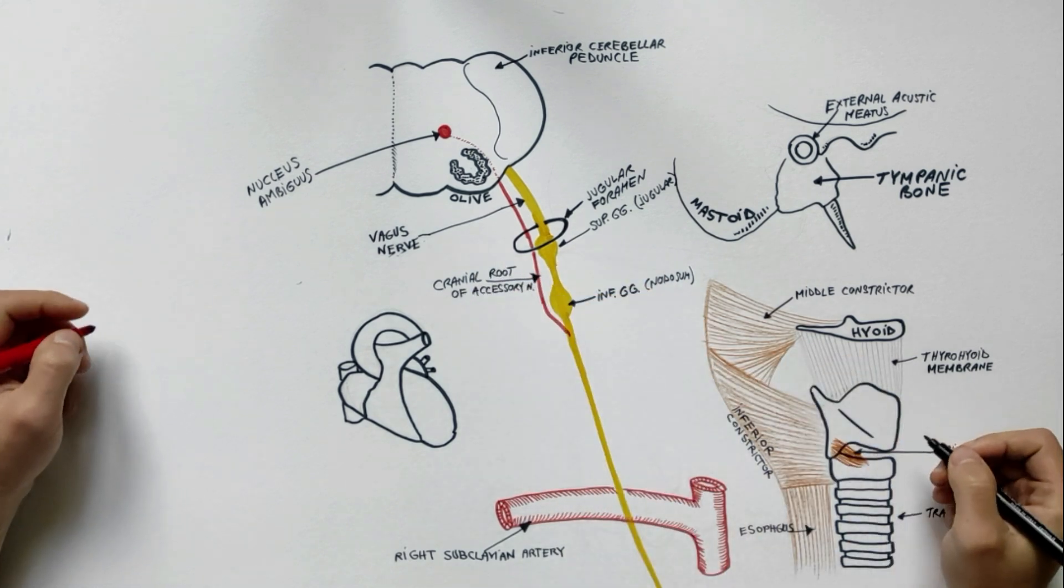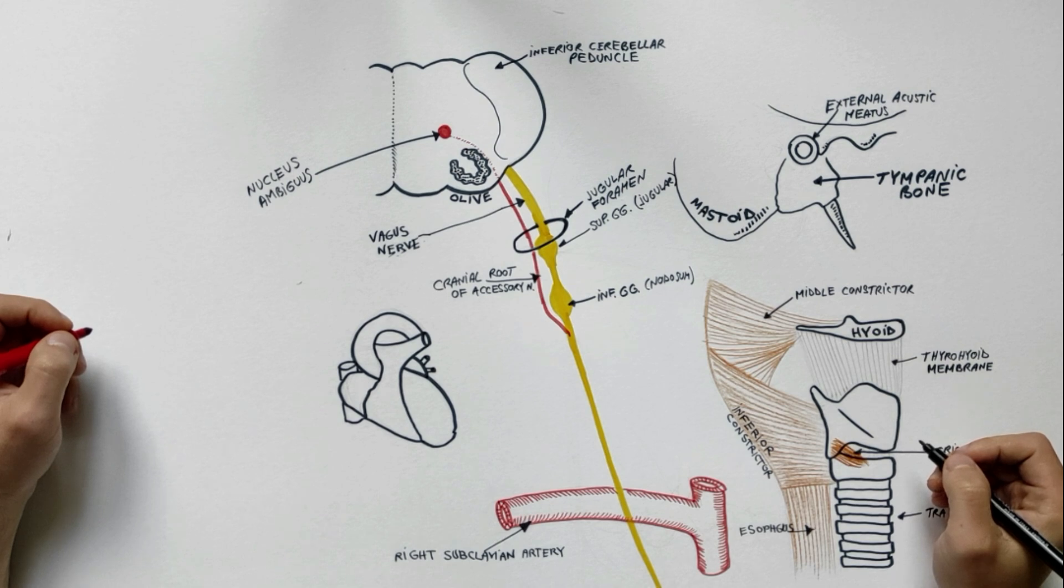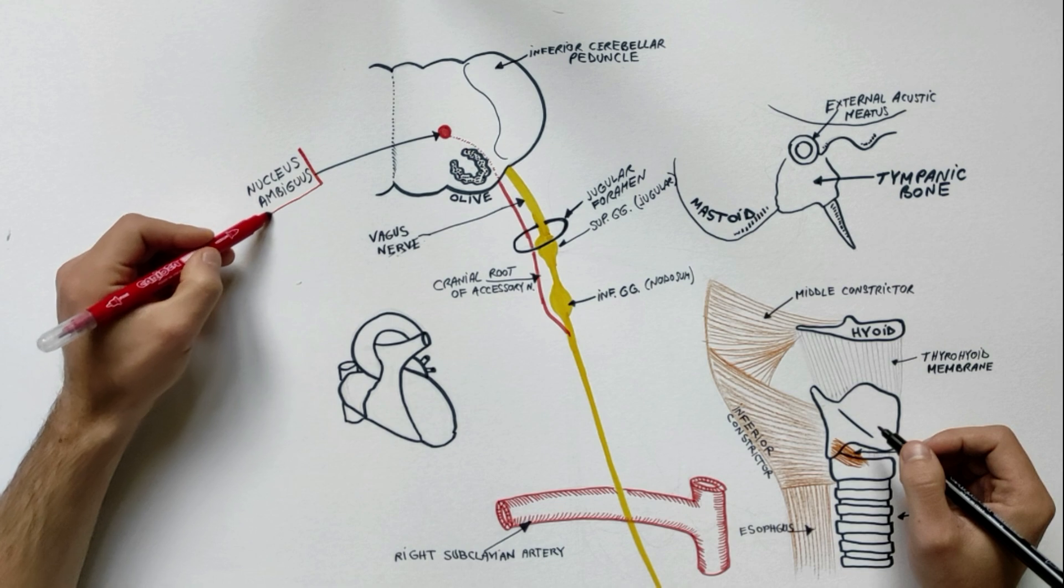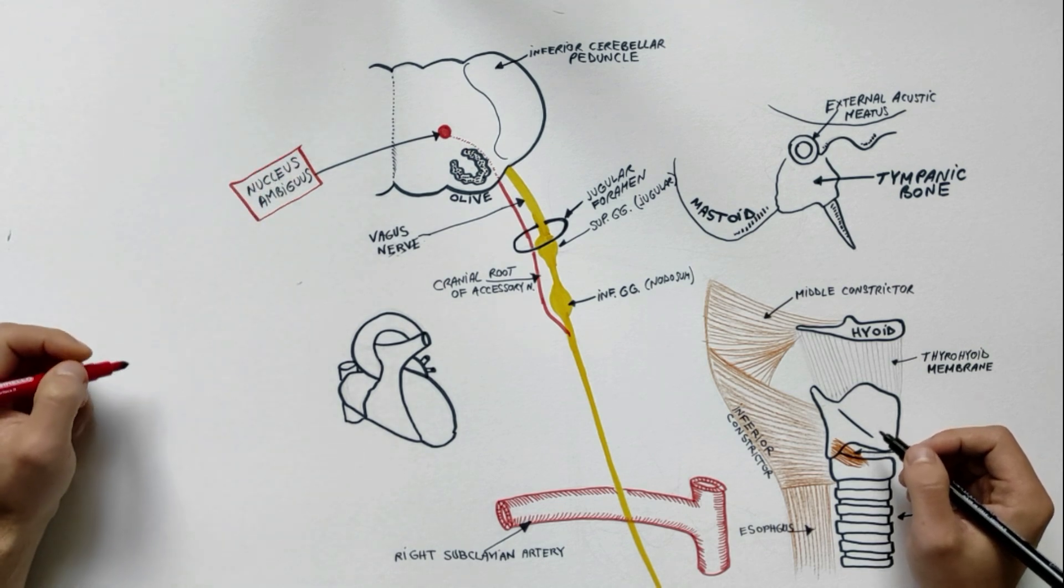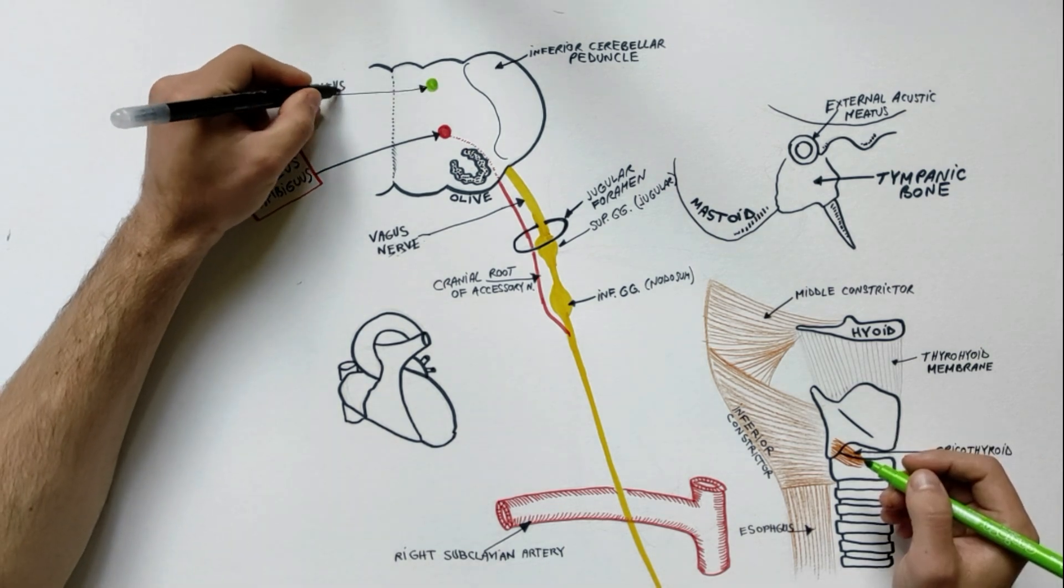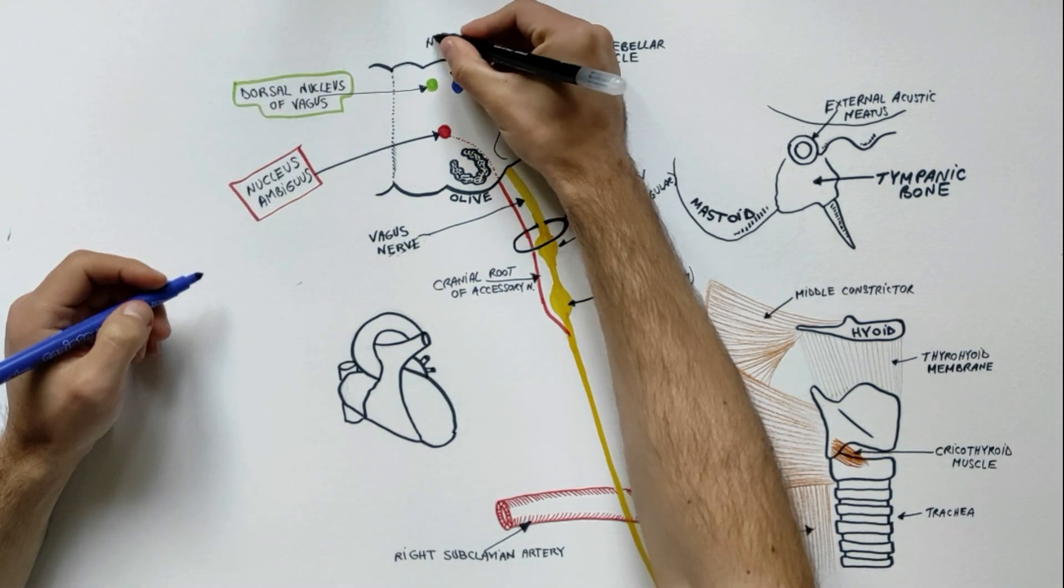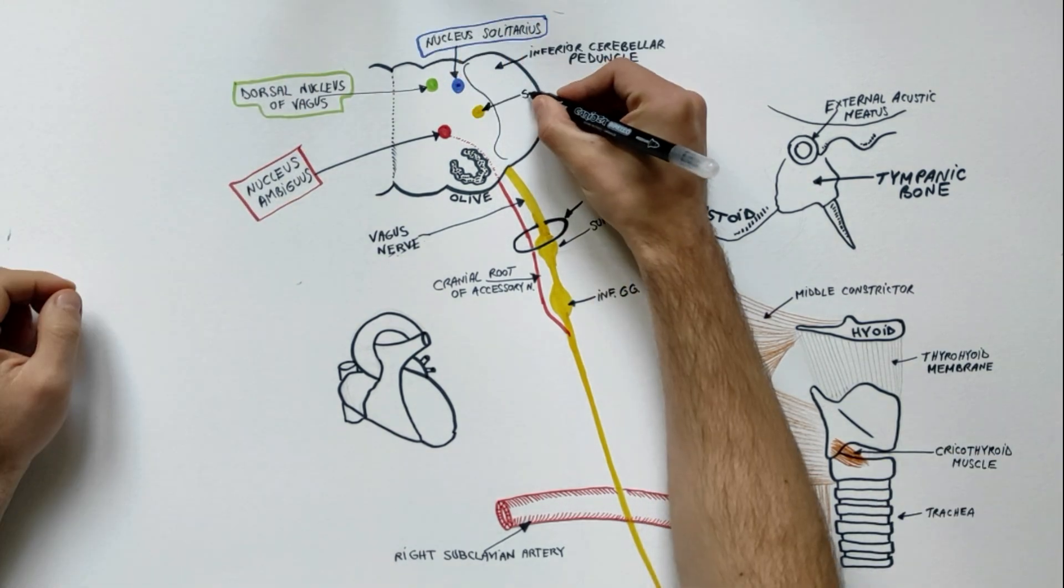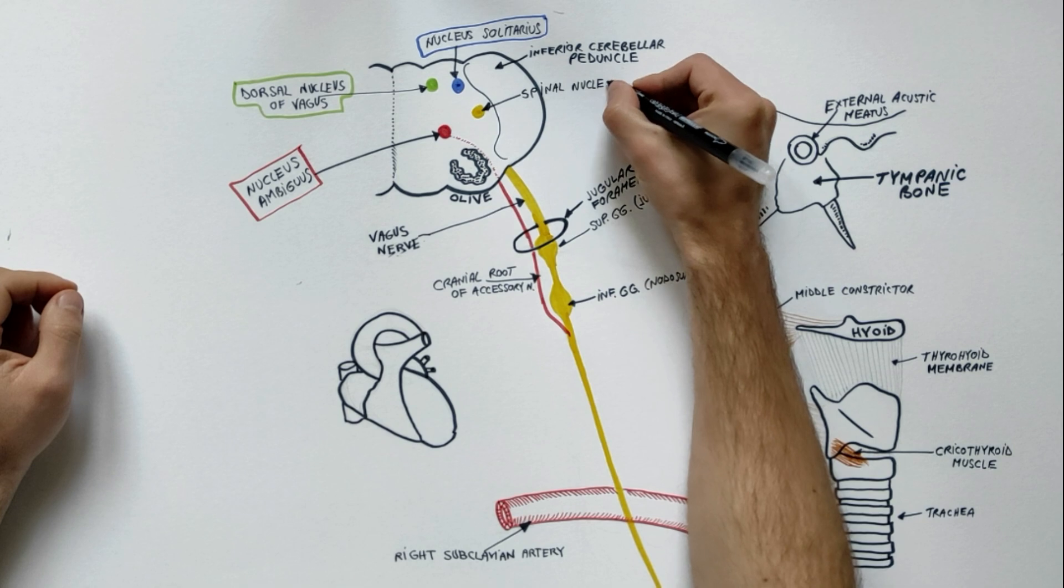The vagus nerve has four related nuclei located in the medulla: the nucleus ambiguus, the dorsal nucleus of vagus, the nucleus solitarius, and the spinal nucleus of trigeminal nerve.